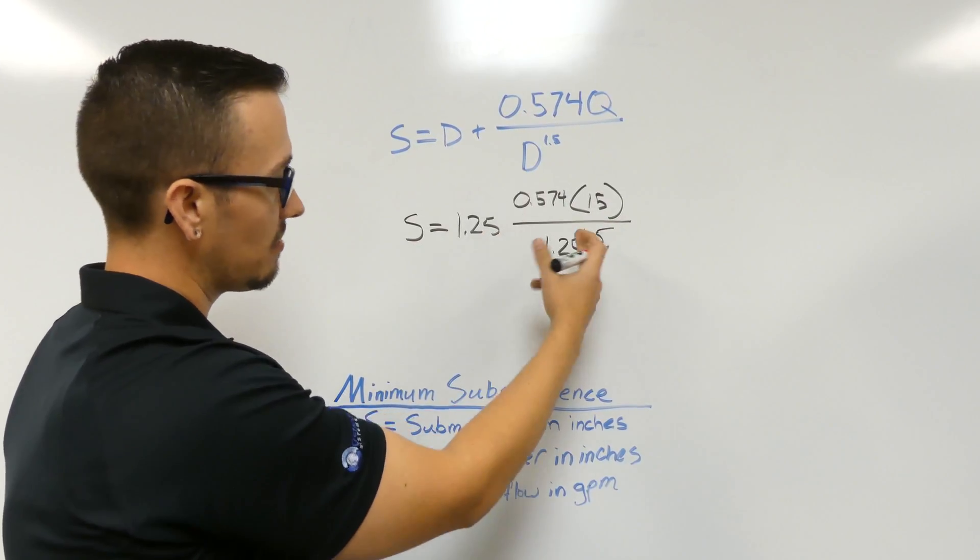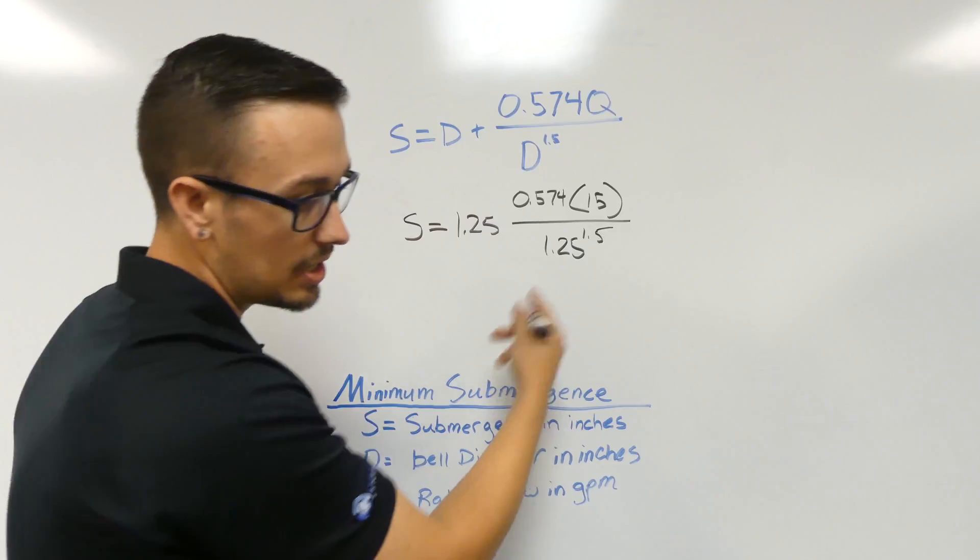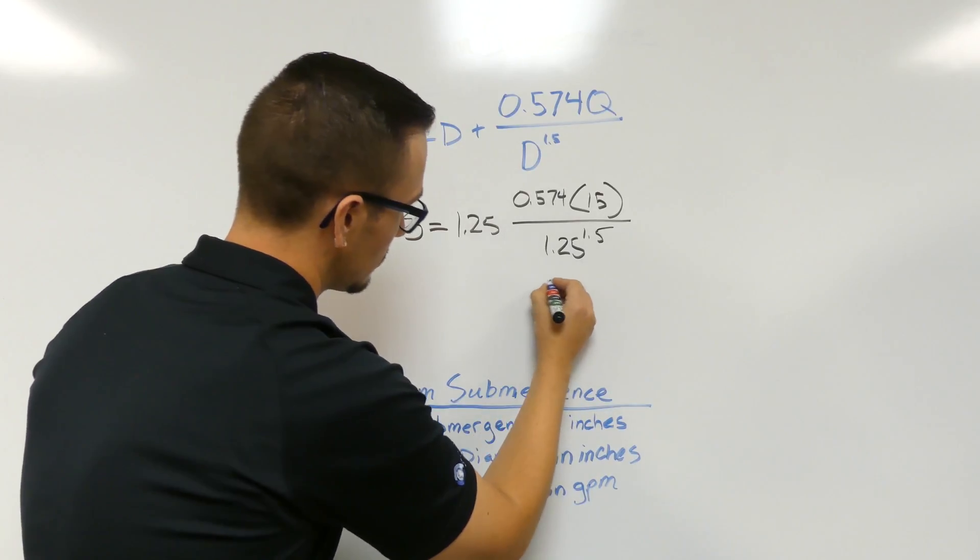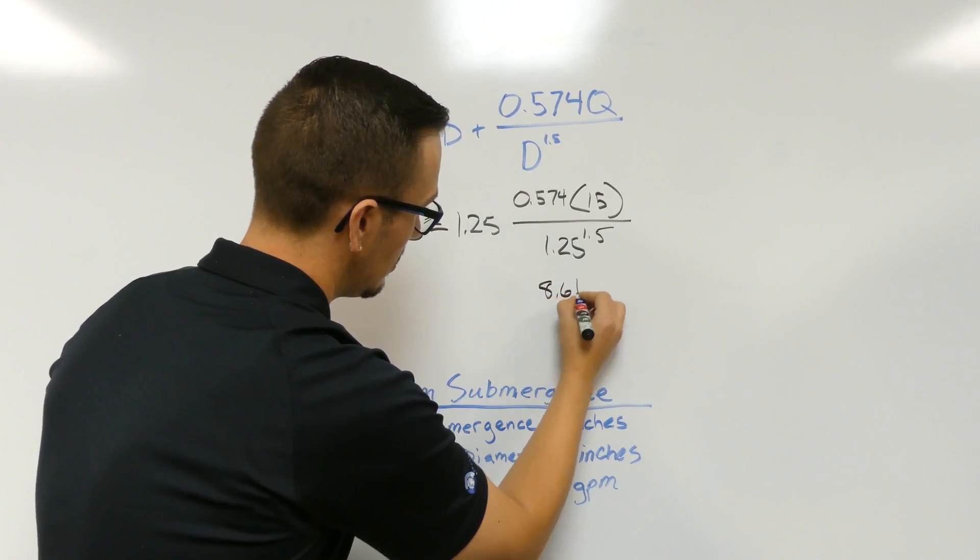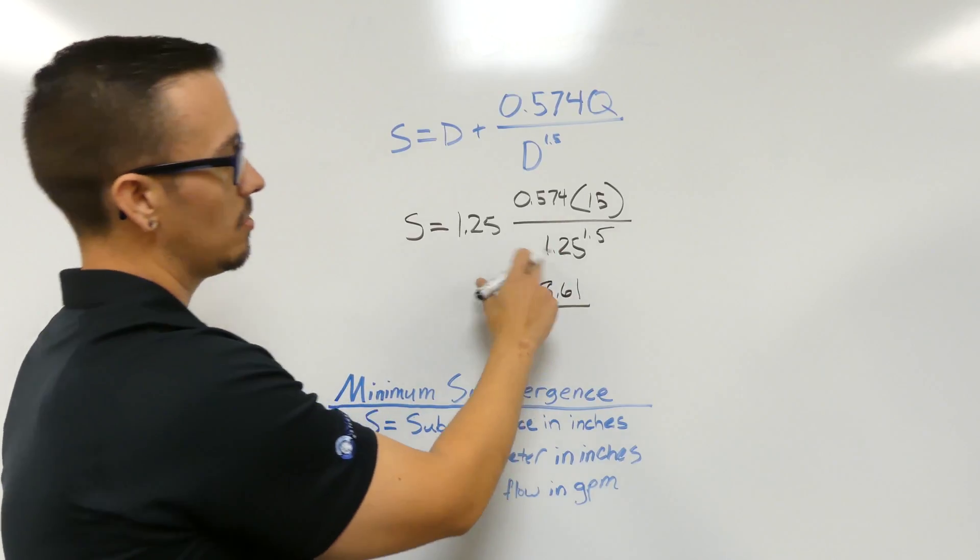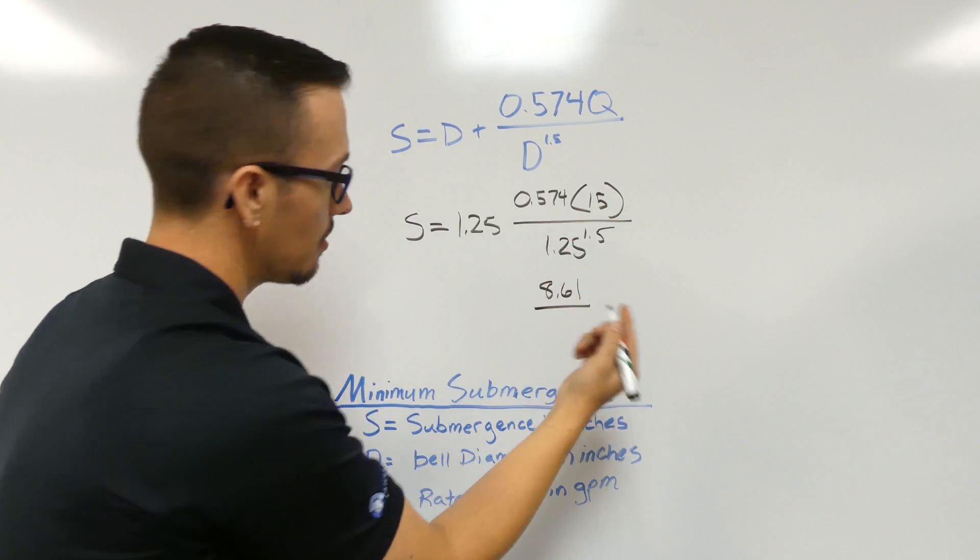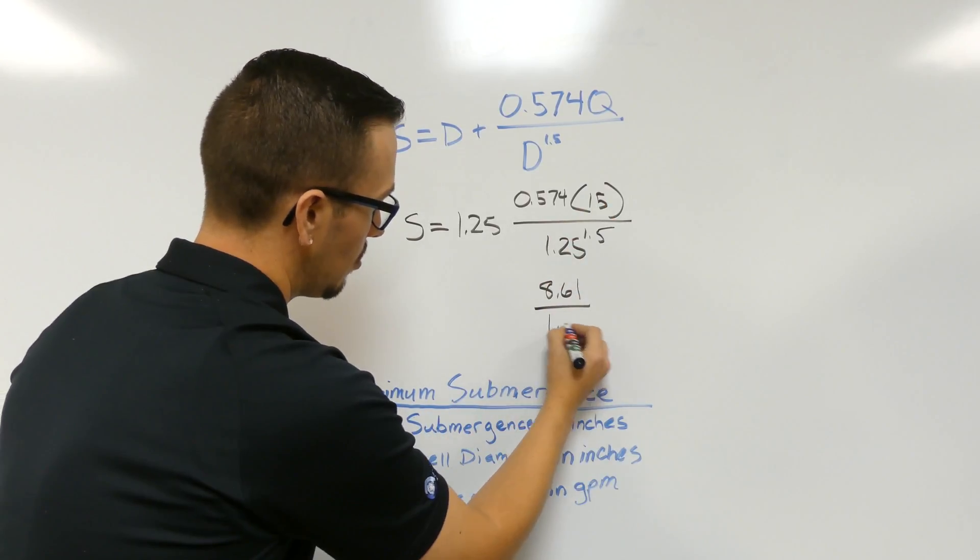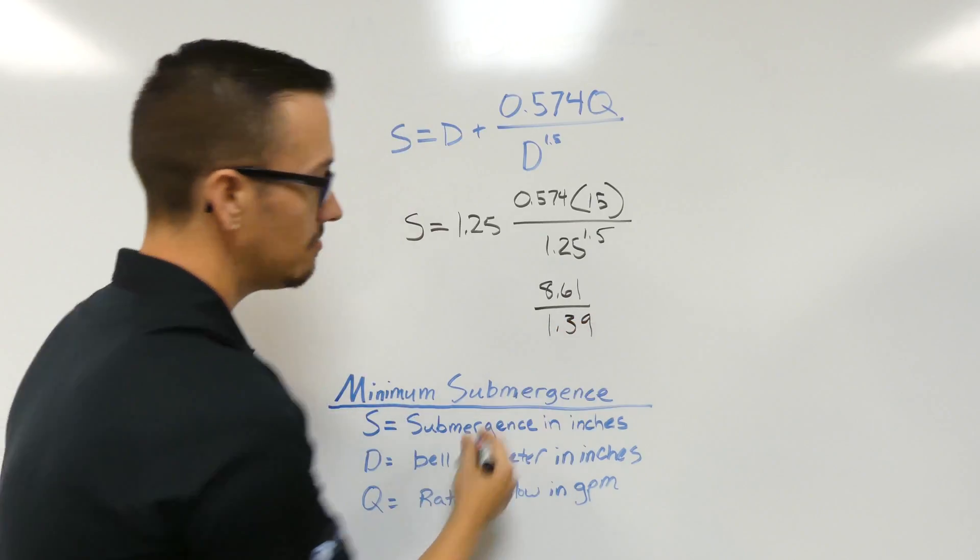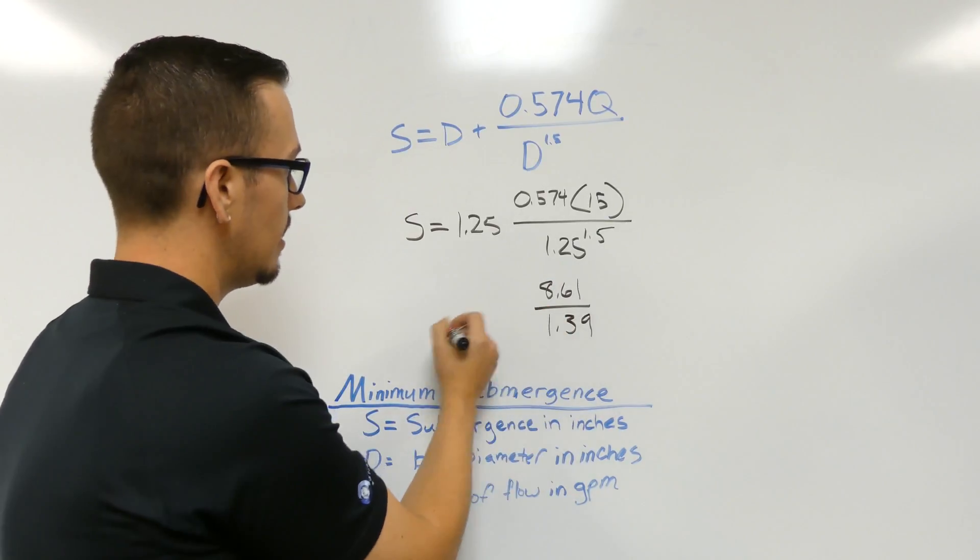So what you end up with is we'll just simplify these out one at a time. So 0.574 times 15, you get 8.61 over 1.25 to the 1.5 power. We're just going to call it 1.39, just round it.